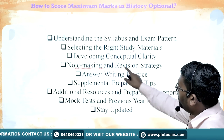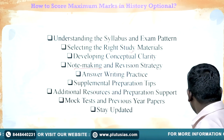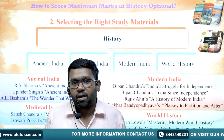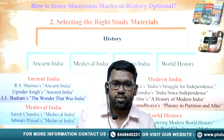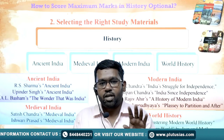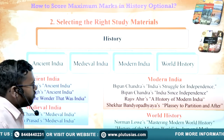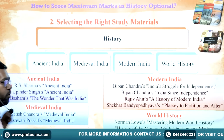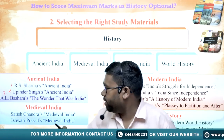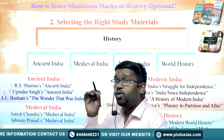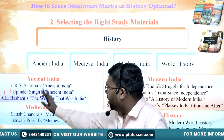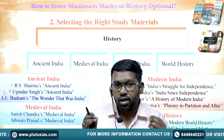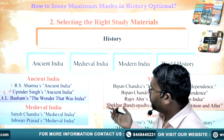The second stage is selecting the right study material, which is a very important point. There are four major themes of the History Optional: Ancient, Medieval, Modern, and World History. For Ancient India, three books are very important. One is Ancient India by R.S. Sharma. Another is a book on Ancient India important for art and culture perspective. The third is Al-Beruni's The Wonder That Was India, known in Hindi as Adbhut Bharat.